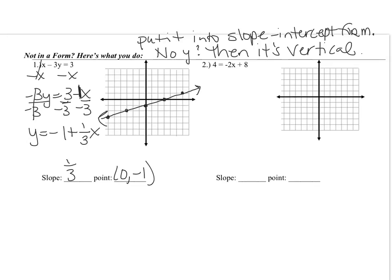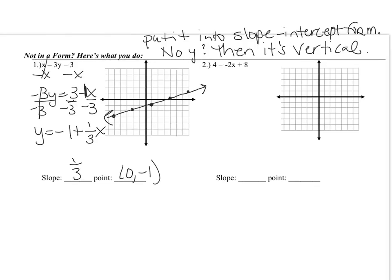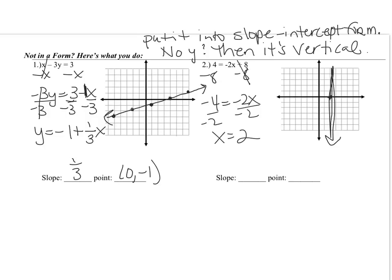For number 2, there's no y in the equation. So we solve for x and it's a vertical line. Subtract 8 from both sides: 4 minus 8 gives negative 4 equals negative 2x. Then divide by negative 2 and you get x equals 2. So you have a vertical line going through x equals 2. The slope is undefined, and the point it goes through can be anything where x is 2, such as the x-intercept 2, 0.